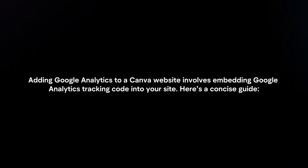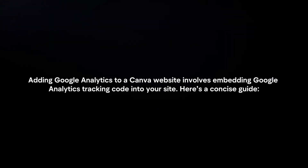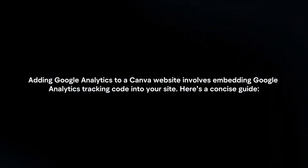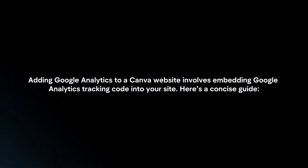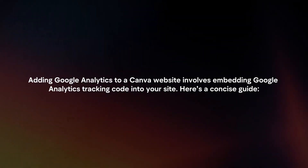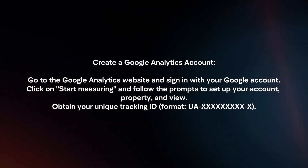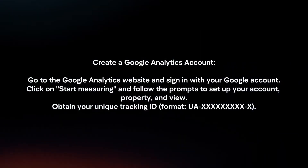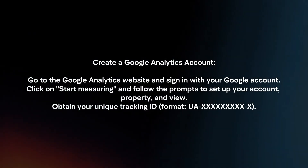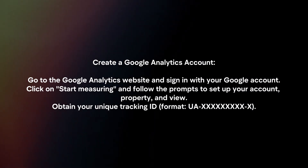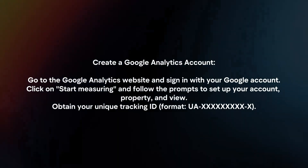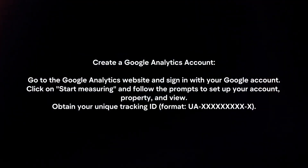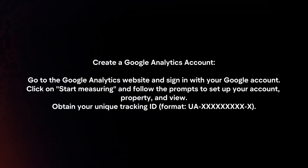Adding Google Analytics to a Canva website involves embedding Google Analytics tracking code into your site. Here's a concise guide. Create a Google Analytics account: go to the Google Analytics website and sign in with your Google account. Click on Start Measuring and follow the prompts to set up your account, property and view.